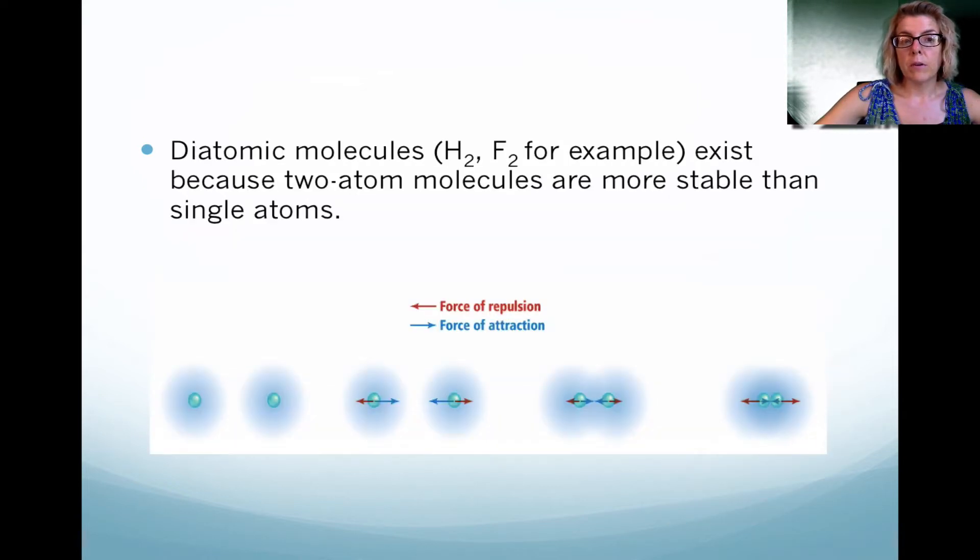Here I have an example of diatomic molecules. The interesting thing that happens with a covalent bond is that we're looking at the force of repulsion and the force of attraction. There's like a sweet spot that exists when those two atoms come together. If you notice on the very right of this picture at the bottom, it's almost as though they are okay with the fact that they're very close to each other, but they're not so close that they're pushing apart from each other. When that happens, we have what we call a covalent bond.